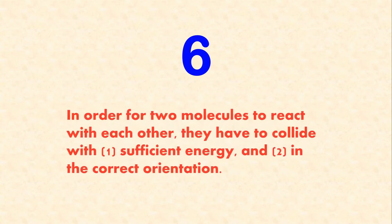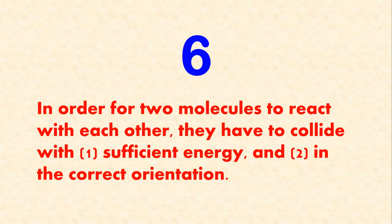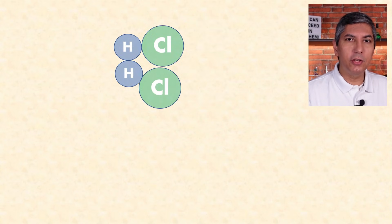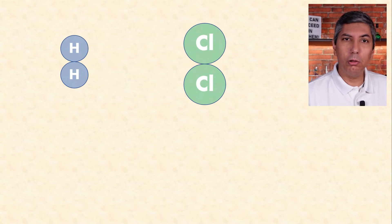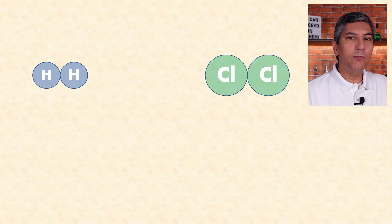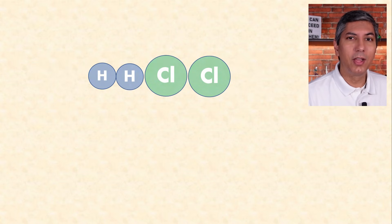Number six: in order for two molecules to react, they have to collide with sufficient energy and in the correct orientation. For hydrogen and chlorine molecules to react, they have to collide quickly with enough energy for a successful collision. If the molecules are moving too slowly, they won't have sufficient energy. Even if they're moving fast enough, if they collide in the wrong orientation, the collision will not be successful — like a key that has to go into a lock in just the right orientation, otherwise the lock does not open.